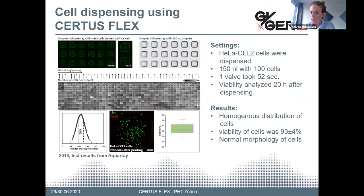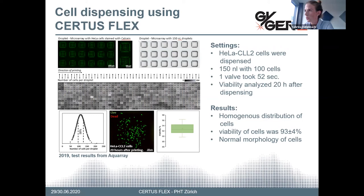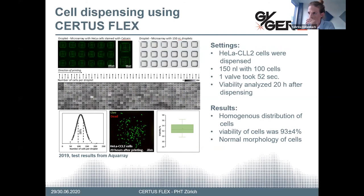For the DMA application, AquaRay used the Sertus Flex for dispensing HeLa cells, which you can see here stained with calcein. 100 cells were dispensed in a total volume of 150 nanoliters. The dispensing was performed in an S-line pattern, and using only a single valve it took 52 seconds in total to dispense a microarray with 672 spots. The viability of the cells was analyzed 20 hours after dispensing, and the results show: first, the cells were distributed homogeneously; second, viability was about 93 percent; and third, the morphology of the cells was comparable to those of a normal culture.